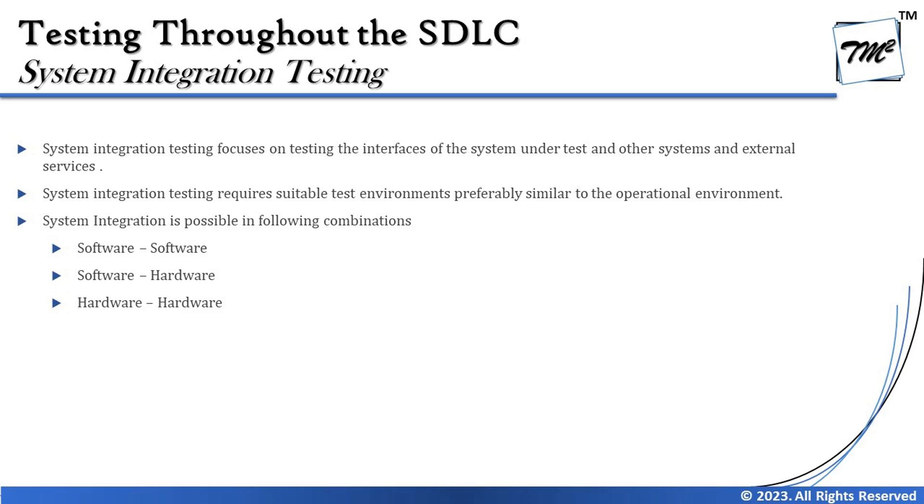System integration testing focuses on testing the interfaces of the system under test and any other system and external services communicating with it. It's not limited to external systems only — sometimes within an internal system you may have parts of different systems connected together as a single product. Most of the time your system interacts with another set of systems from a different vendor, put together as an end product.